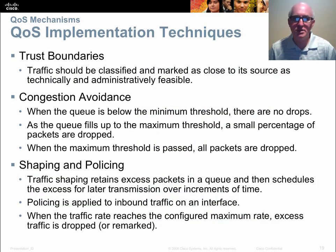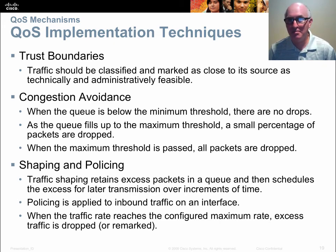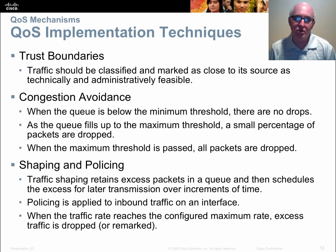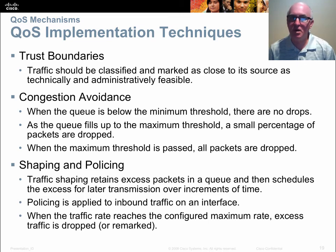There's what's called the trust boundary — who we should trust to make these markings. It isn't always the end device. If we let PCs mark their own traffic, they'll probably mark everything high priority. So we're probably not going to trust end devices to correctly mark their own traffic. We want a device under our control to be the trust boundary — anything beyond that is not trusted and we're going to reevaluate and remark it. Even if traffic is classified coming in to the trust boundary, the device at the edge will do the classification markings, where it is administratively feasible to control the traffic.